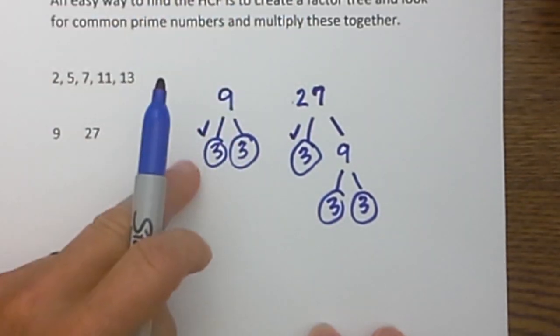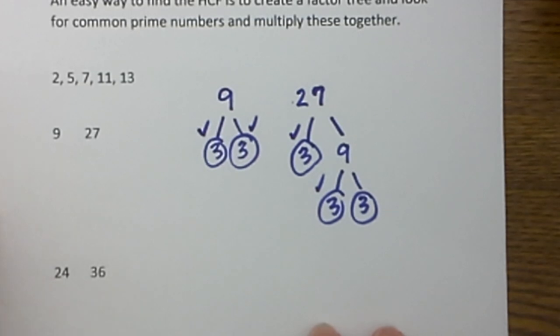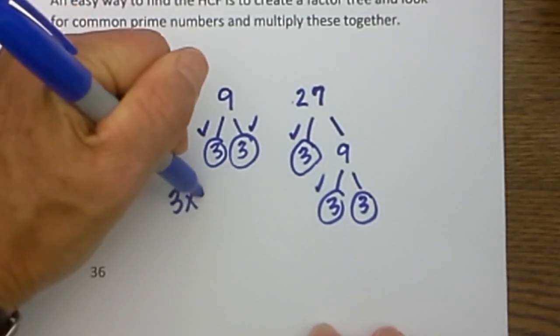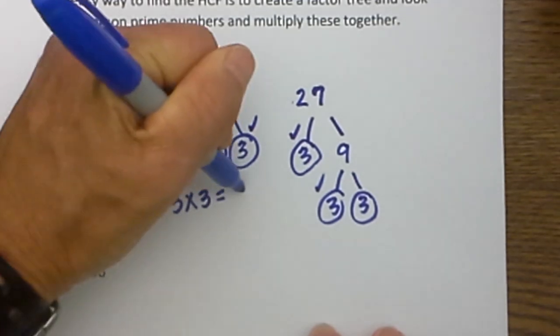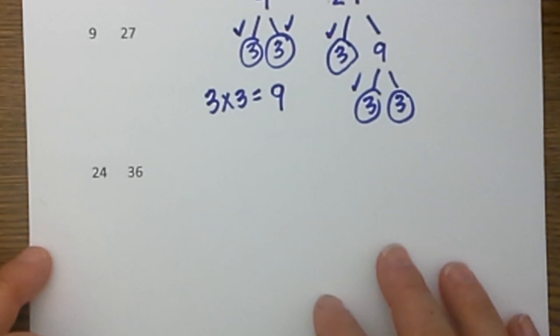So 3 and 3 are both common, and at this point we are finished. I just multiply the two common prime numbers: 3 times 3 is equal to 9, so 9 is the highest common factor for 9 and 27. That was a fairly basic example. Let's move on to another one.